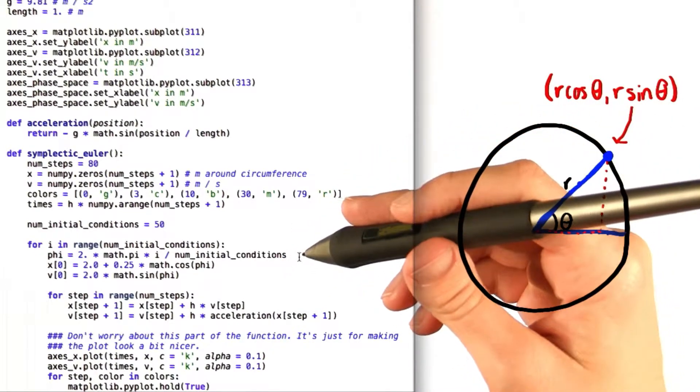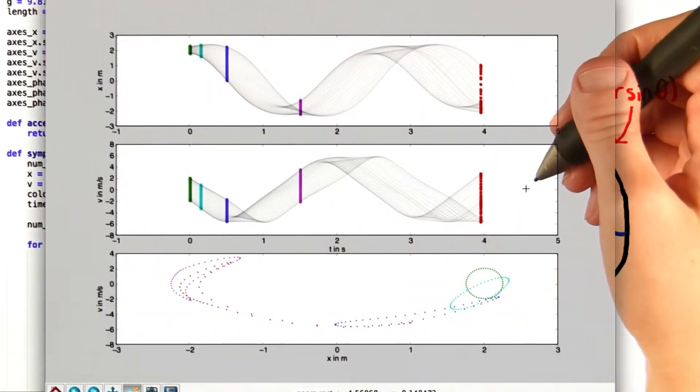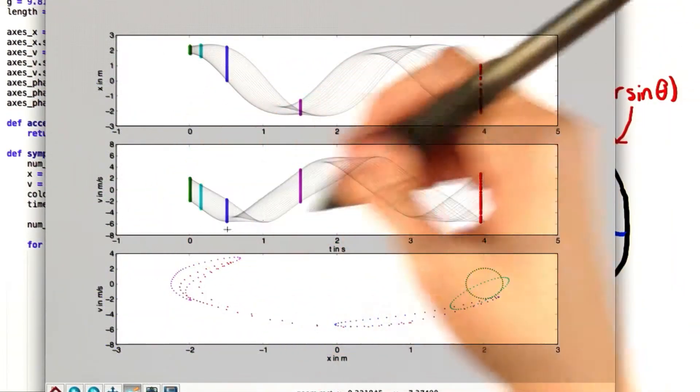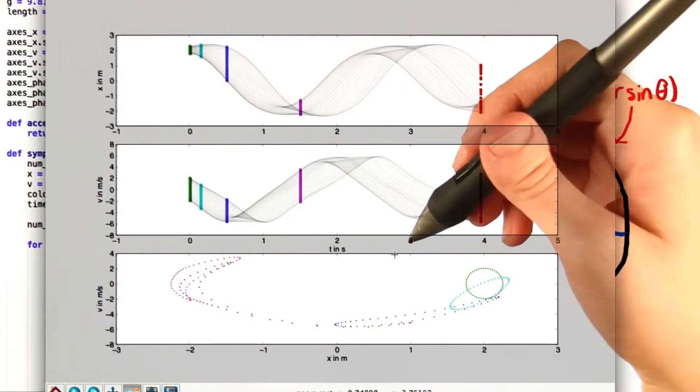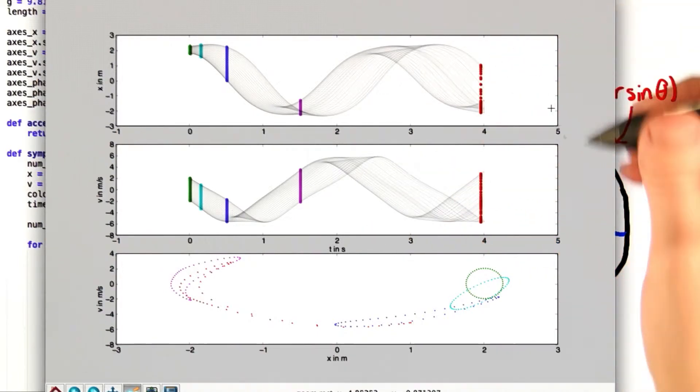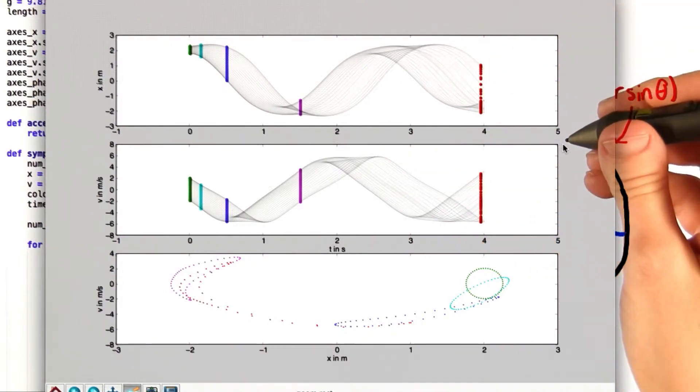Now let's go back to looking at the plot that we get from this program. Now first let's look at our top two plots. The horizontal axis in both of them represents time measured in seconds. The vertical axis in the top one is x measured in meters, and here it is v measured in meters per second.